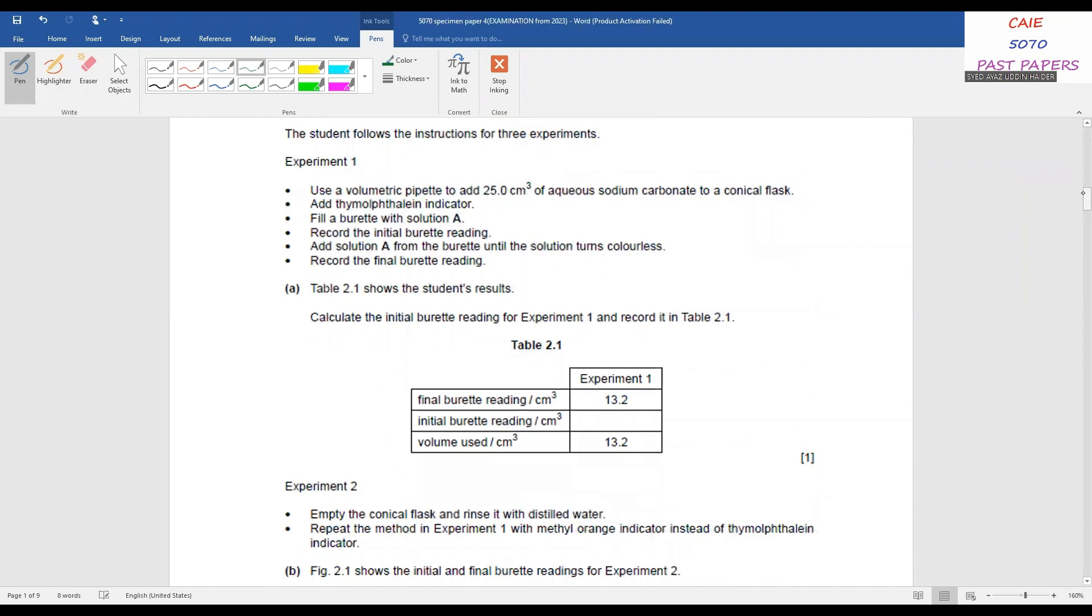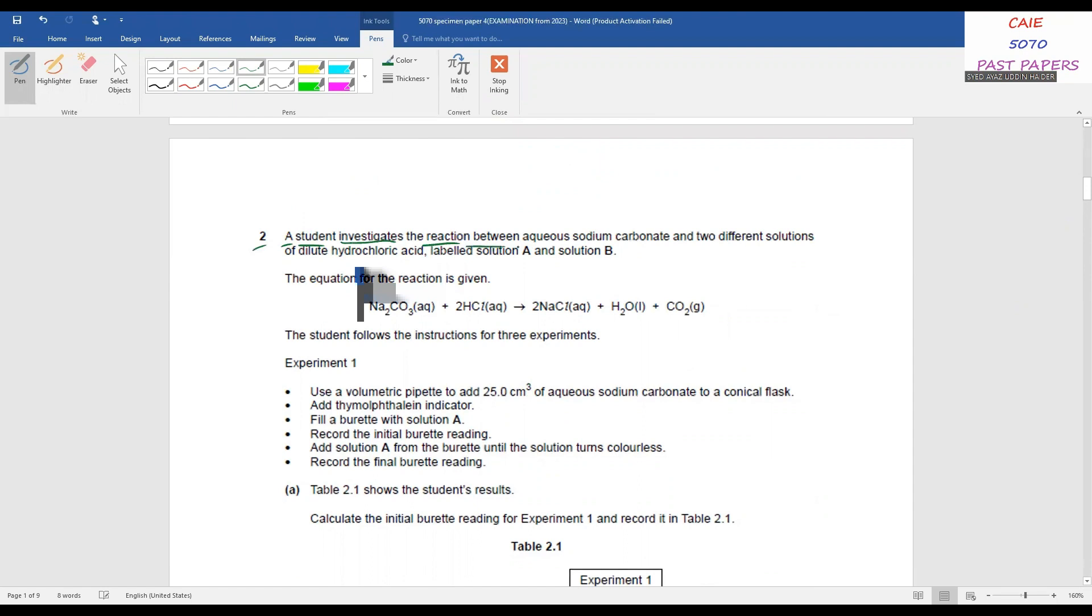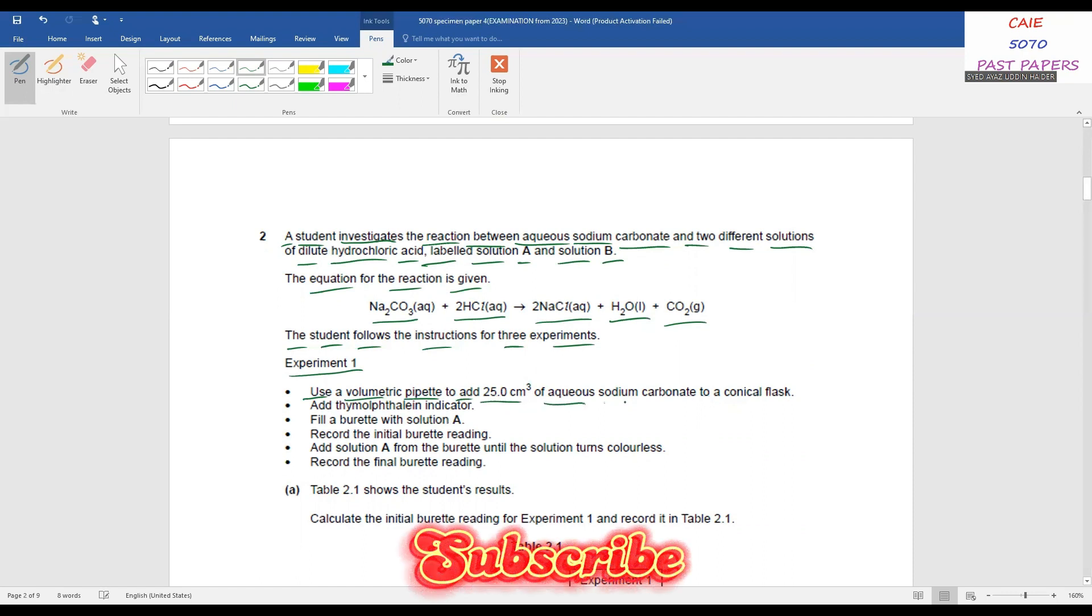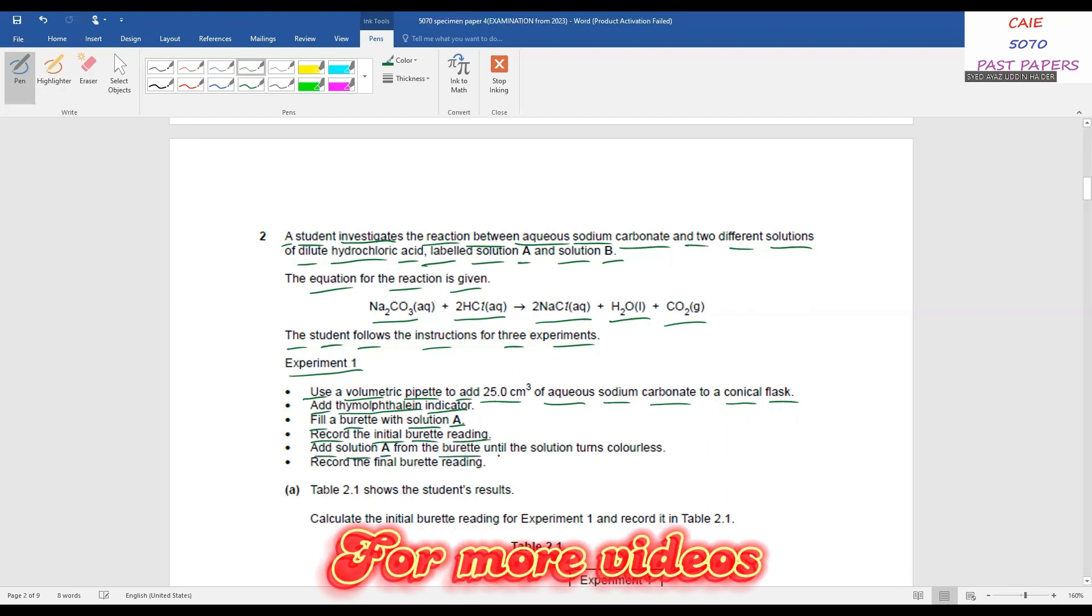Question number two: A student investigates the reaction between aqueous sodium carbonate and two different solutions of dilute hydrochloric acid labeled solution A and solution B. The equation for the reaction is given: Na2CO3(aq) + 2HCl(aq) → 2NaCl(aq) + H2O(l) + CO2(g). CO2 gas is produced in this reaction. The student follows instructions for three experiments. Experiment 1: use a volumetric pipette to add 25 cm³ of aqueous sodium carbonate to a conical flask, add thymolphthalein indicator, fill a burette with solution A, record the initial burette reading, add solution A from the burette until the solution turns colorless, record the final burette reading.